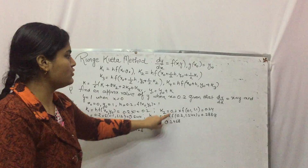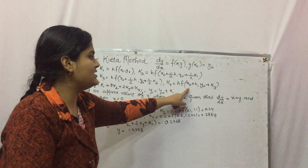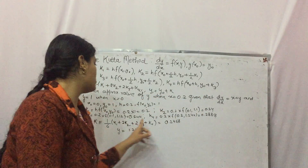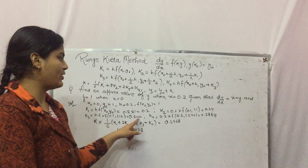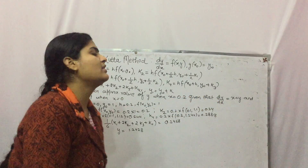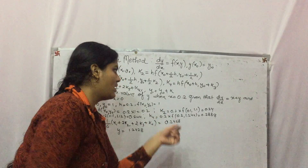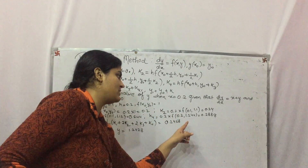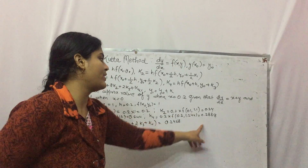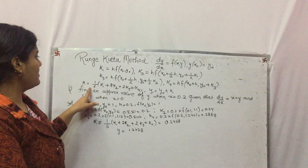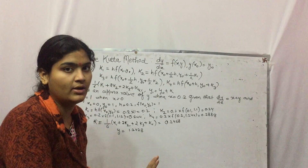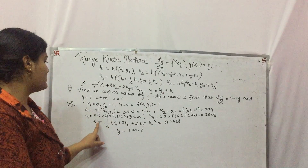K4 = H · F(x₀ + H, y₀ + K3). H = 0.2, x₀ + H = 0 + 0.2 = 0.2, and y₀ + K3 = 1 + 0.244 = 1.244. Substituting into F(x, y) = x + y: 0.2 + 1.244. Multiplying by 0.2 gives K4. Now to find the overall K value — remember this is for the fourth-order method.